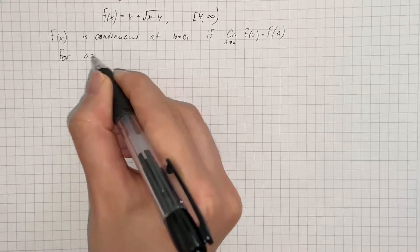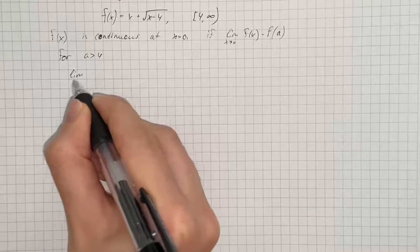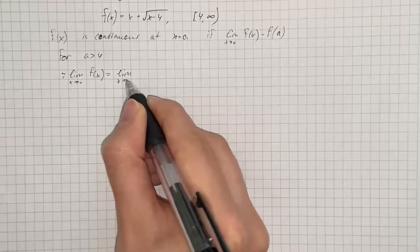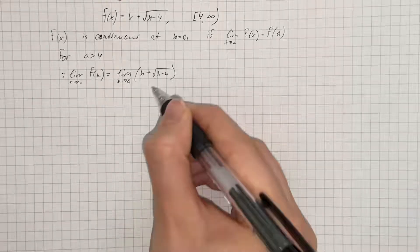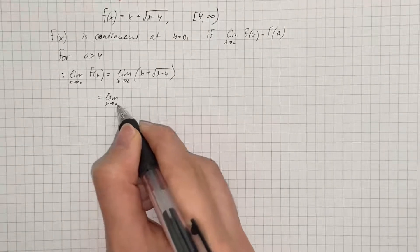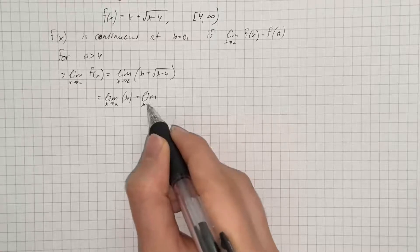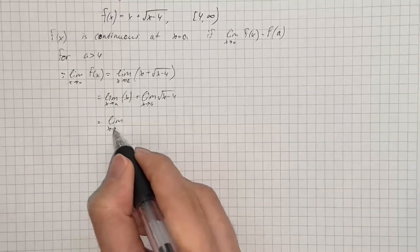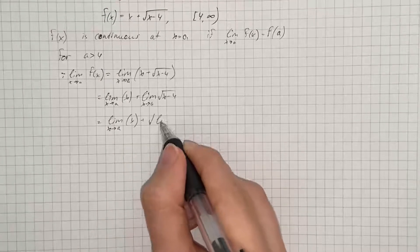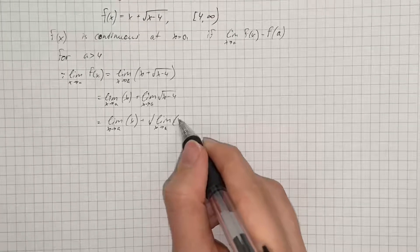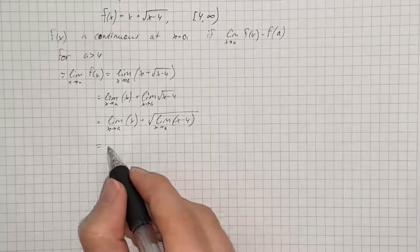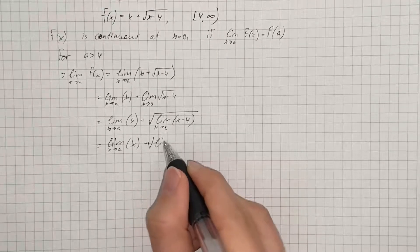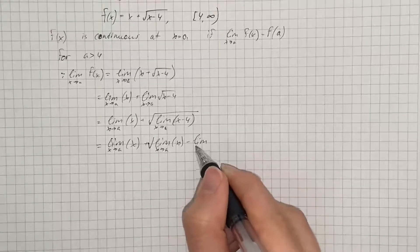For a greater than 4, we have that the limit as x approaches a of f(x) equals the limit as x approaches a of x plus the square root of x minus 4. That equals the limit as x approaches a of x, plus the limit as x approaches a of the square root of x minus 4, which equals the limit as x approaches a of x plus the square root of the limit as x approaches a of x minus 4.